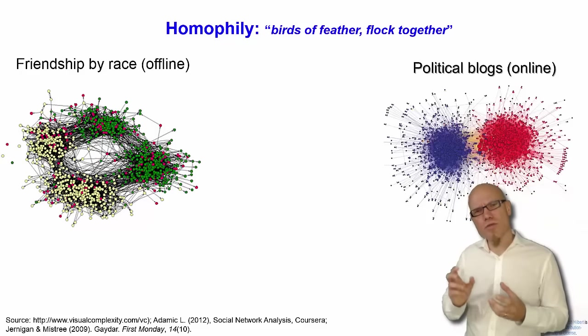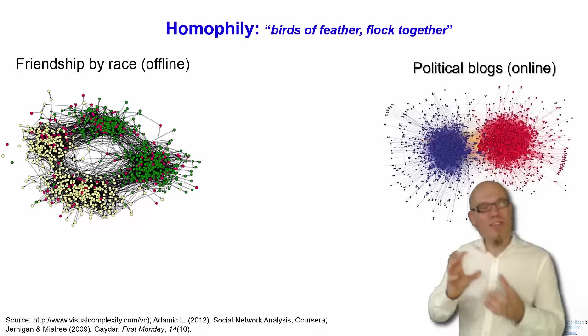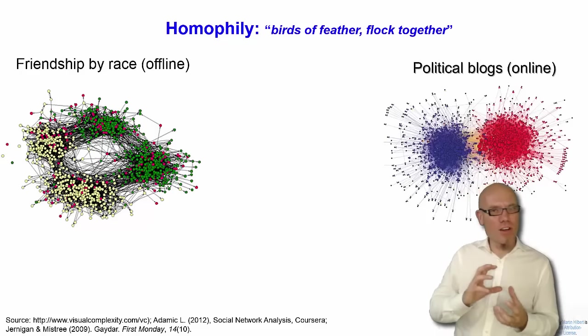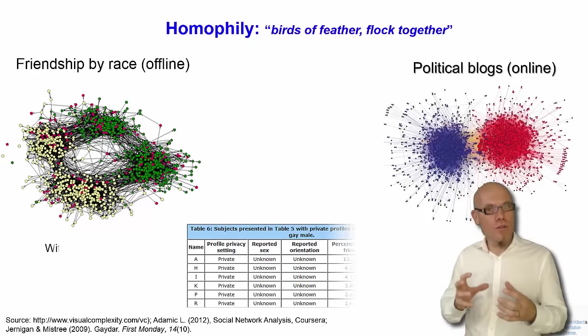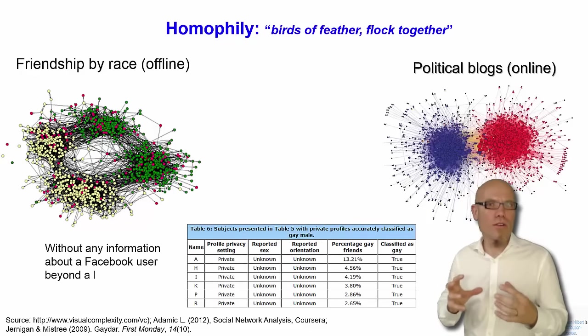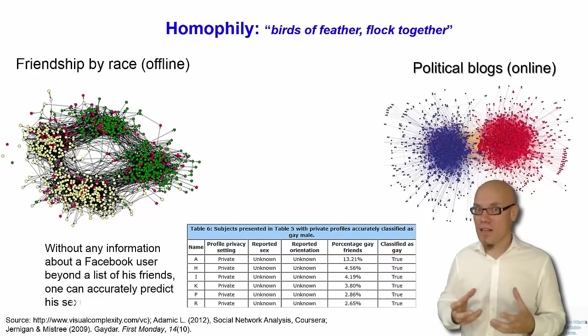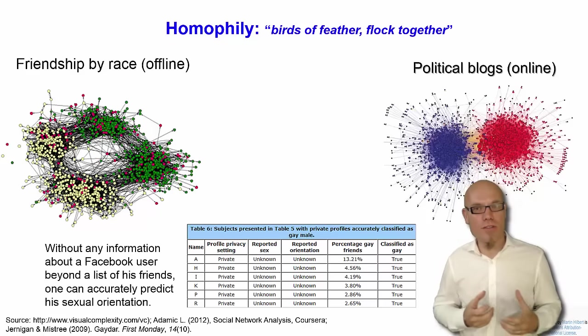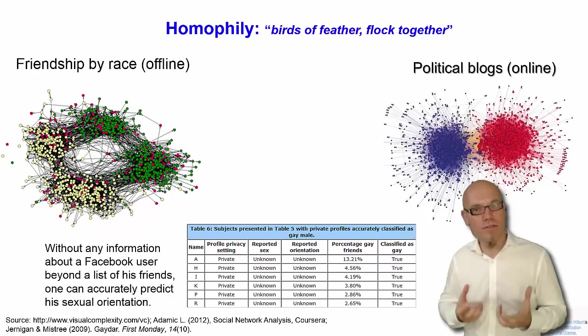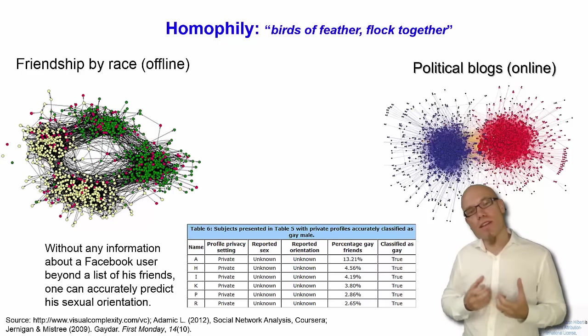Homophily also allows us to infer nodes from their links or links from their nodes. So if I know who you connect with, I know who you are. And if I know who you are, I know who you're likely to connect with. For example, in this study here, they showed that without any information about the Facebook user beyond a list of his friends, you could accurately predict the sexual orientation.